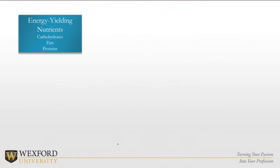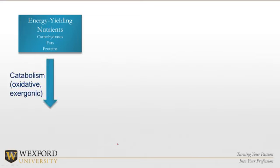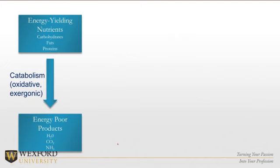Where do we get our fuel? It's our food — those macronutrients: carbohydrates, fats, and proteins. Through catabolism, we break it down. It's oxidative and exergonic — we break it down to energy-poor products: water, carbon dioxide, ammonia. So this is what we bring in at the top, and that's what we put out.